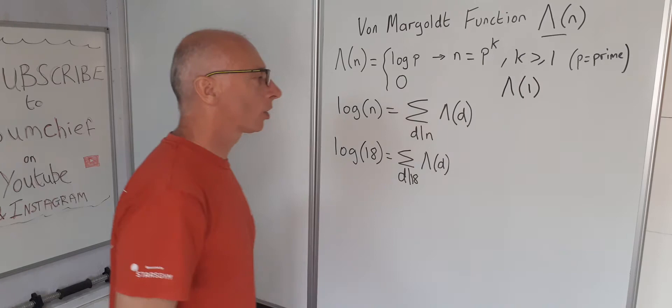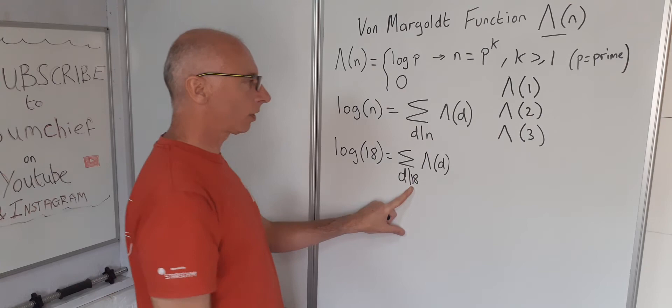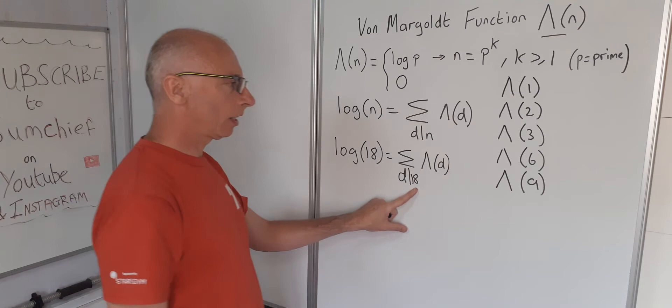So we need the von Mangoldt function for 1. 2 goes into 18, 3 goes into 18, 4, 5 doesn't, 6 does, 7 and 8 don't. So then we're going to need 9, and then the last one we need is just 18.